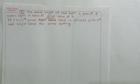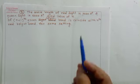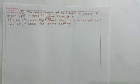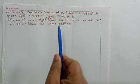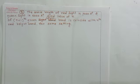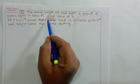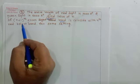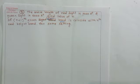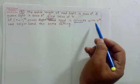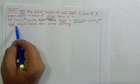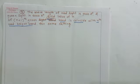The fifth example: the wavelength of red light is 7000 angstrom units and green light is 6000 angstrom units. Find N such that the (N+1)th green bright band coincides with the Nth red bright band for the same setting.